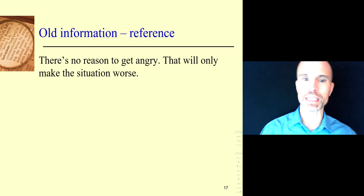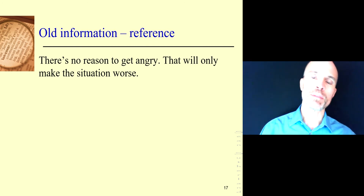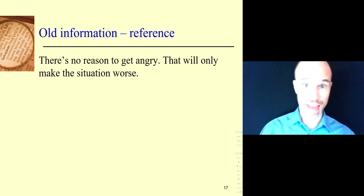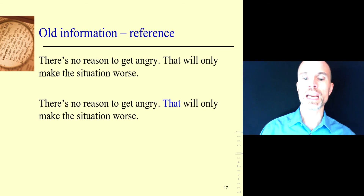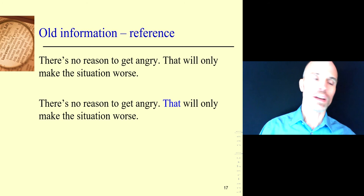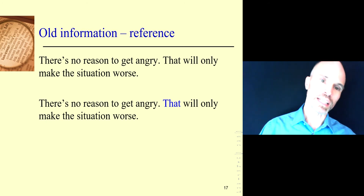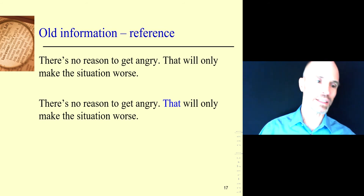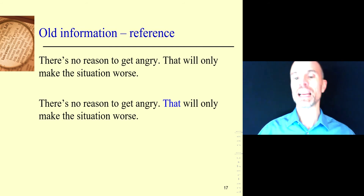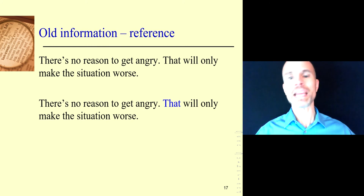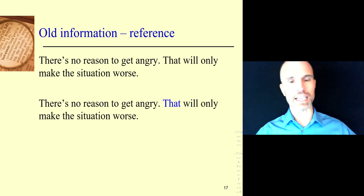It doesn't always have to be direct repetition. The theme of the second sentence can use reference. For example: 'There's no reason to get angry. That will only make the situation worse.' You know that 'that' means getting angry - it contains that information. The connection is still made, the text makes sense, and it can progress.